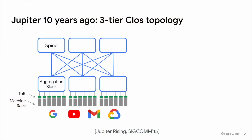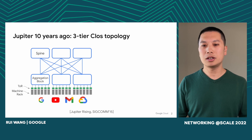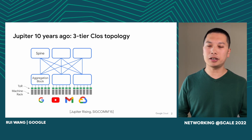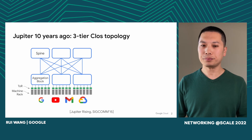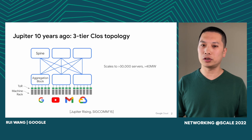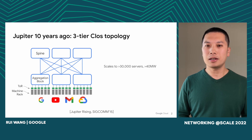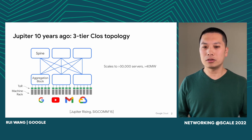Ten years ago, we built Jupyter in a classical three-tier cloud topology. At the bottom of this hierarchy are the servers that power all the familiar services you use every day — YouTube, Gmail, Google Search, Google Cloud. These services are connected by top-of-rack switches, or ToRs, to aggregation blocks, which are then interconnected by a layer of spine switches. This architecture allowed us to scale to more than 30,000 servers with uniform 40 gigabit per second per server connectivity — that is 40 megawatt or more of infrastructure.